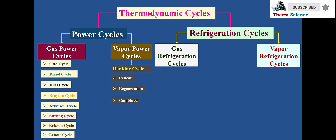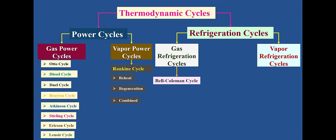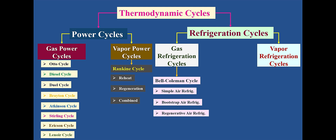Gas refrigeration cycle is also called the Bell-Coleman cycle or reverse Brayton cycle. Further classifications of gas refrigeration cycles are: simple air refrigeration cycle, bootstrap air refrigeration cycle, regenerative air refrigeration cycle, and reduced ambient system.